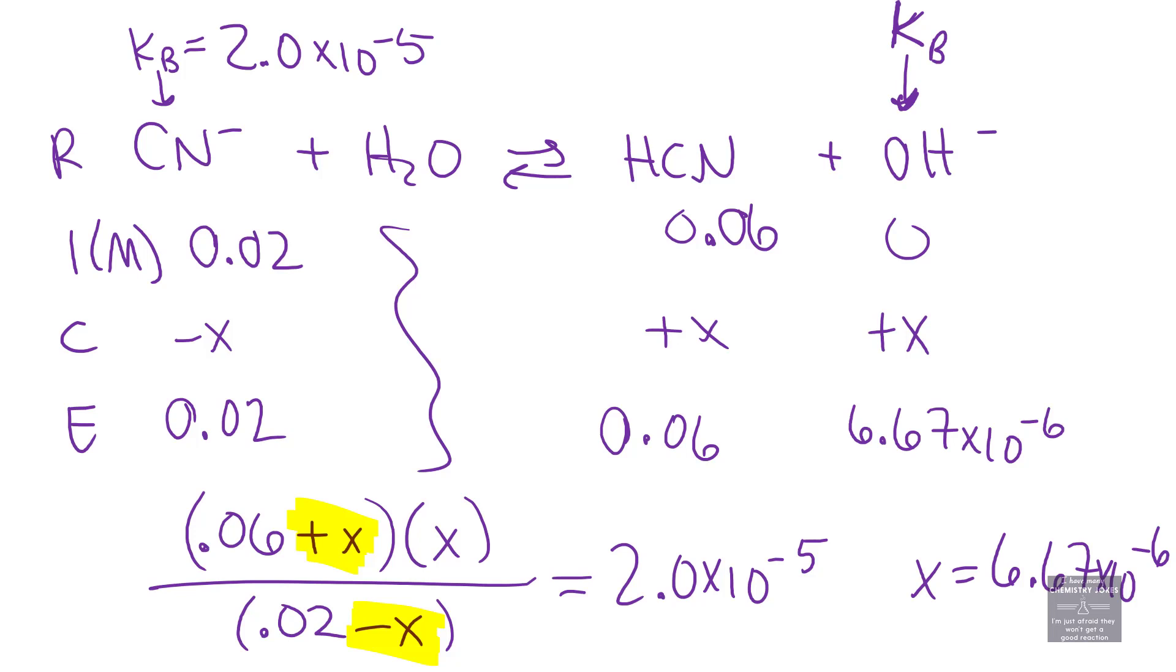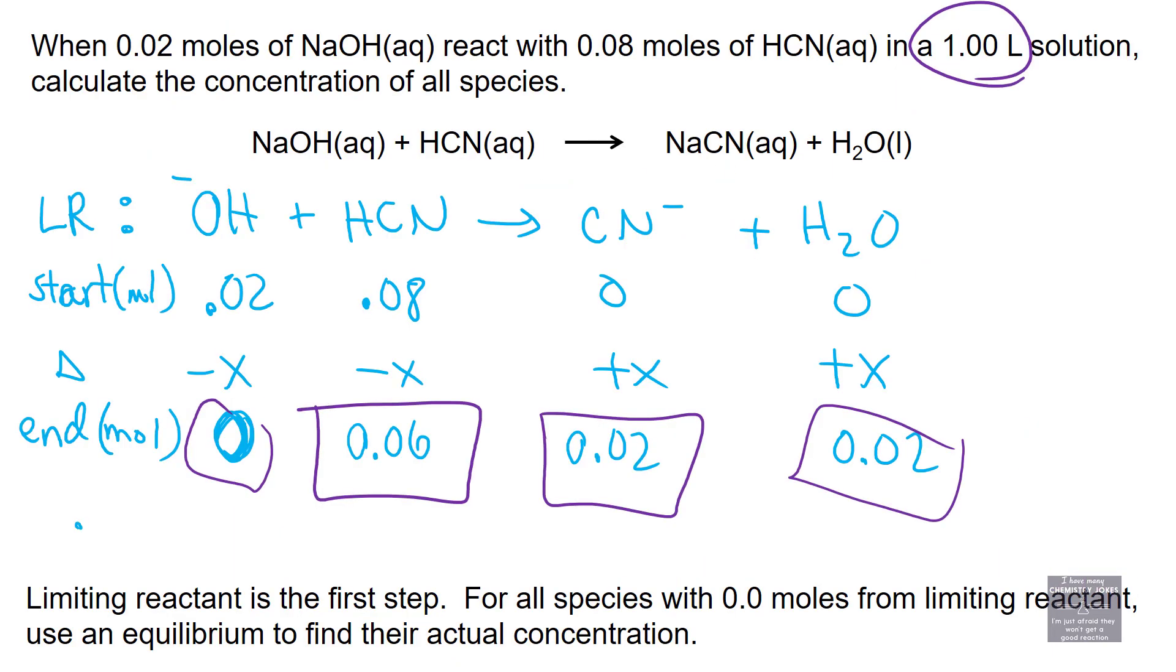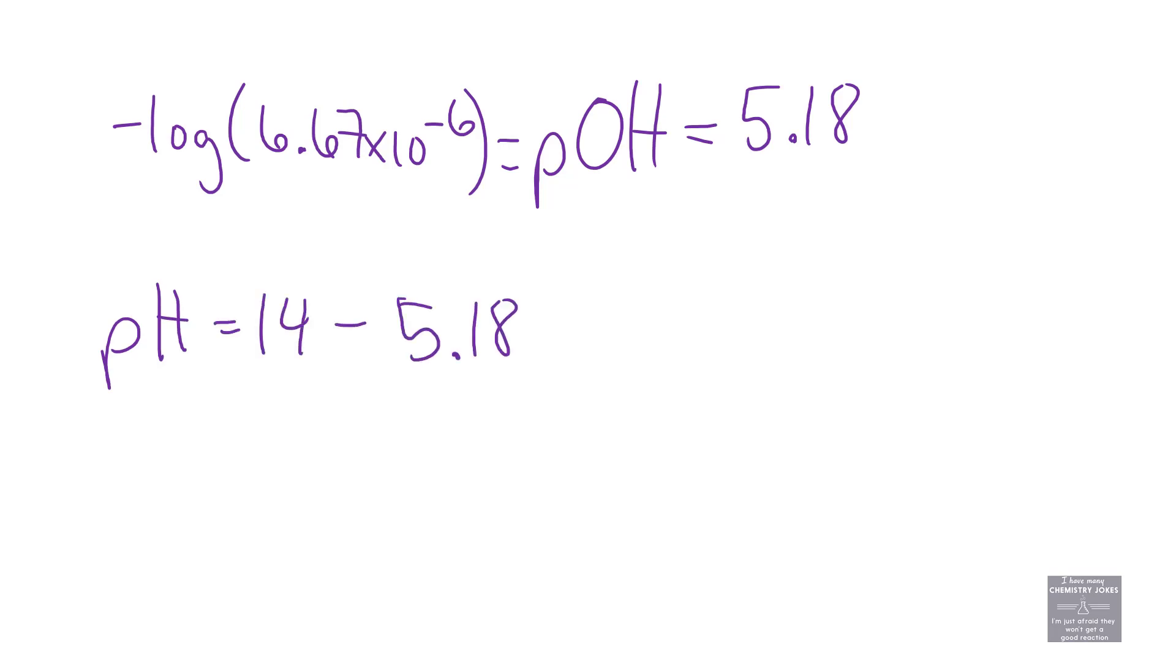The question did not ask us, but it's very common for the next question to be: what is the pH of the solution after adding 0.02 moles of hydroxide and 0.08 moles of HCN? Negative log of 6.67 times 10^-6 equals pOH at 5.18, so pH is 14 minus that, giving pH of 8.82. You expect it to be more basic after adding hydroxide, but it doesn't mandate pH above 7 - it depends on how much hydroxide you add.